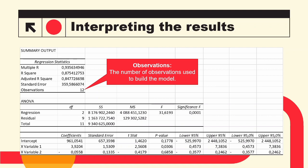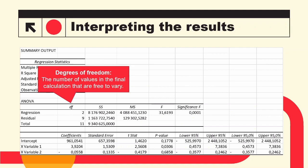Moving on to the ANOVA section, we begin with degrees of freedom, which are related to our observations and number of variables in the model. The total degrees of freedom is 11, which is one less than the number of observations, because the model as a whole uses up one observation. Each variable in the model uses up a degree of freedom as well — we had two variables, machine hours and units produced, so the regression uses two degrees of freedom, leaving nine degrees of freedom for the residual. The more degrees of freedom, the better.